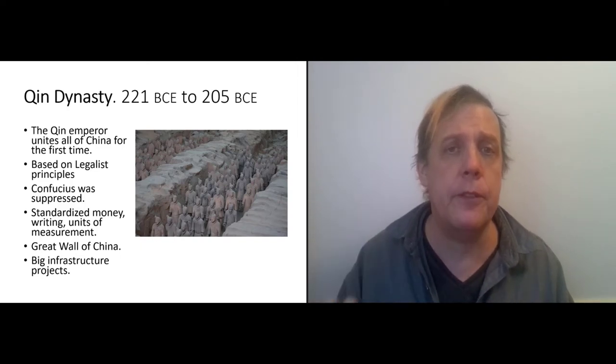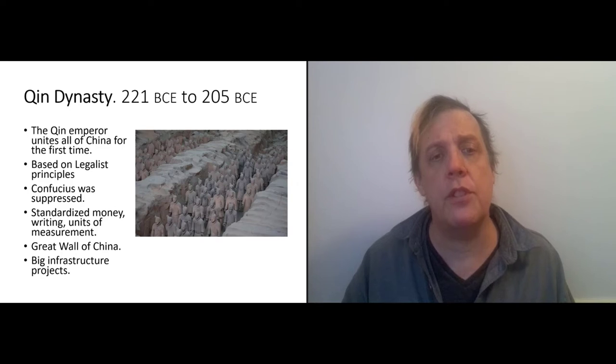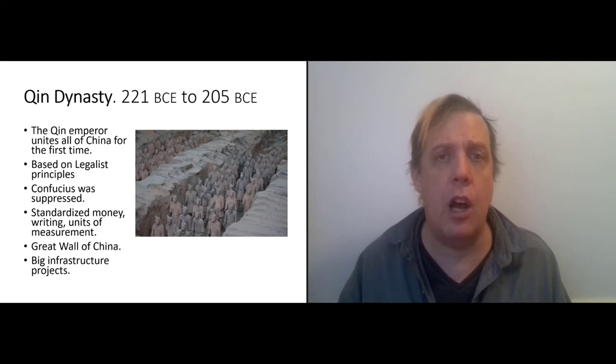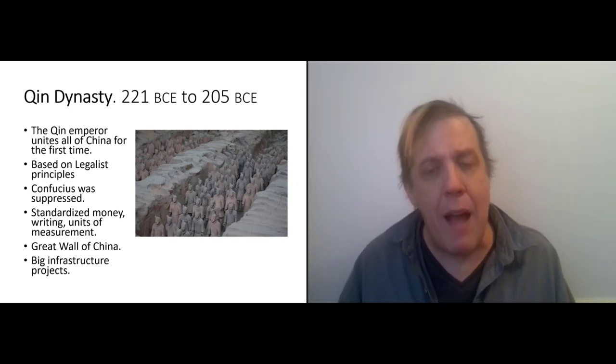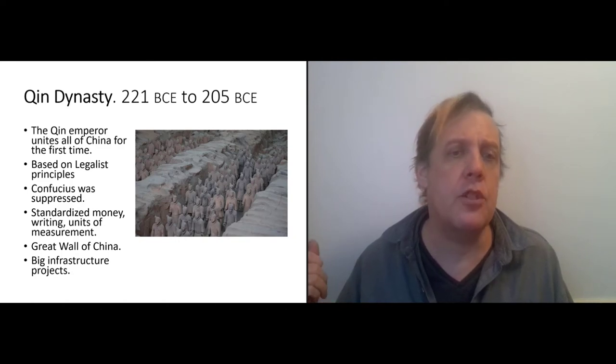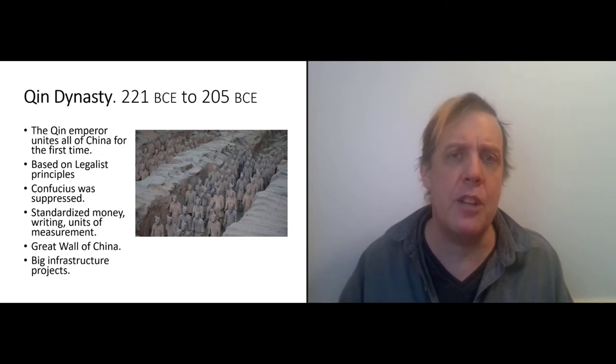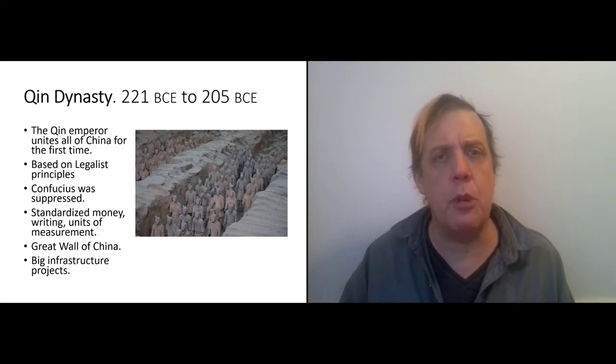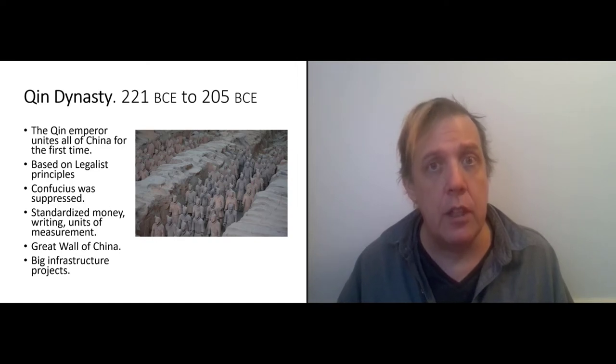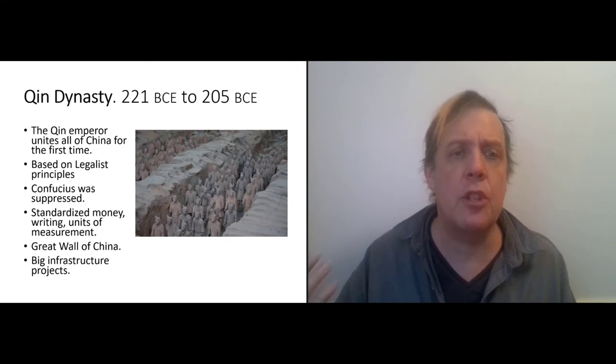During this period of time, Confucian teaching was actually suppressed. But what the Qin emperor was able to do was install a lot of the mechanisms, the technologies that allow large-scale civilization to be possible: standardized units of money, standardized systems of writing, standardized units of measurement. These are sort of bureaucratic technologies that allow us then to build physical technologies.